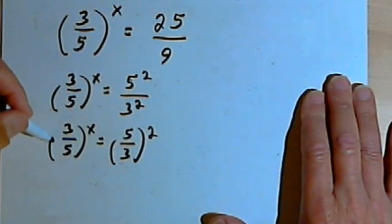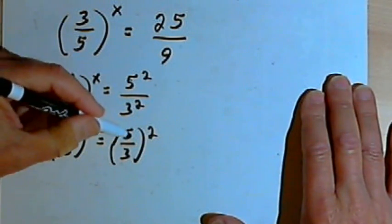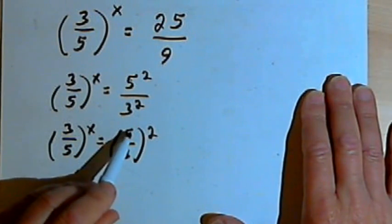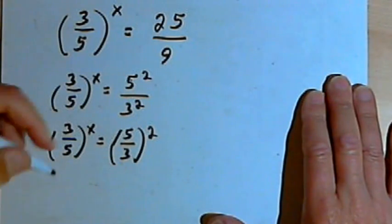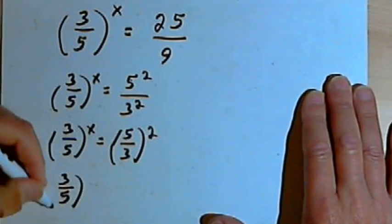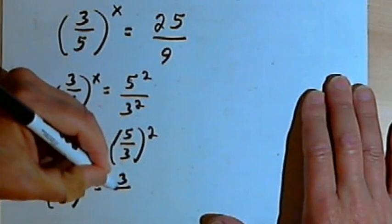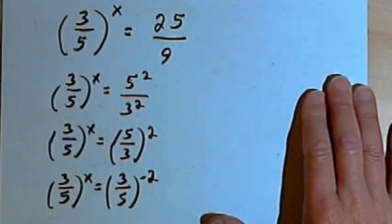Now notice on one side of the equation I've got 3 over 5, the other side I've got 5 over 3. I could flip this second fraction over. I could make it 3 over 5 if I change the sign of the exponent. So I can just write 3 over 5 raised to the x equals 3 over 5 raised to the negative 2.